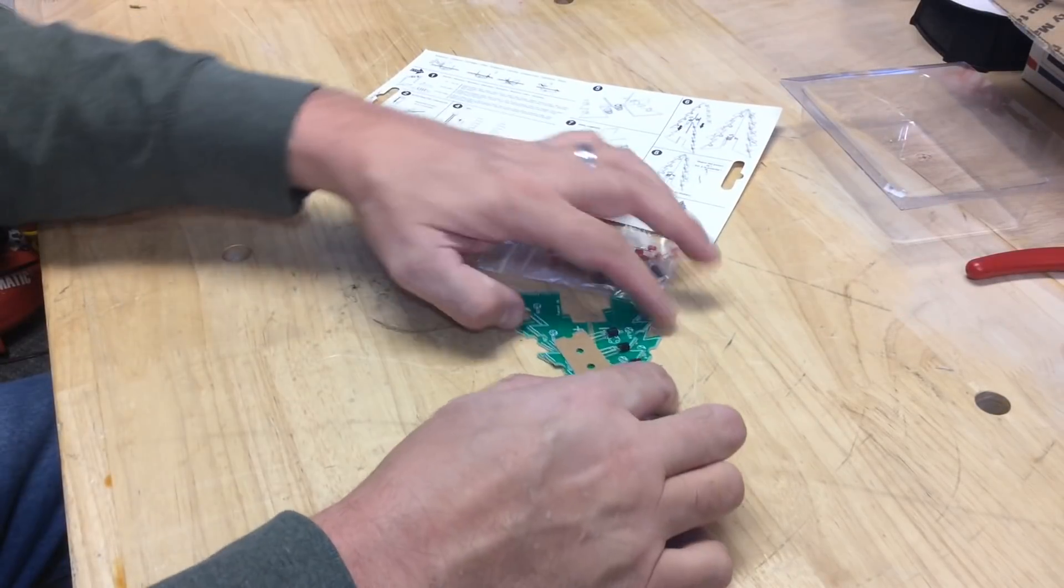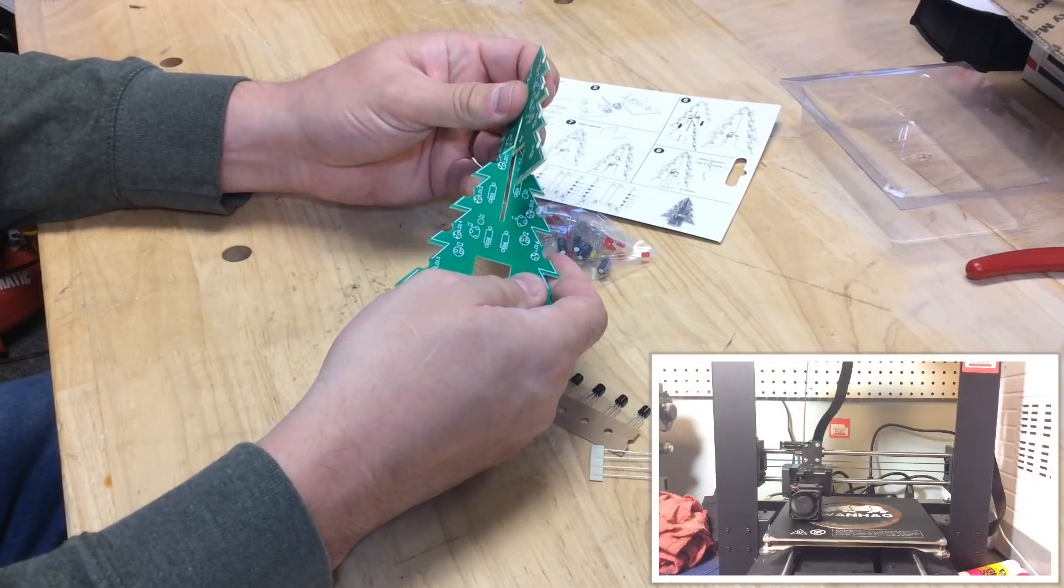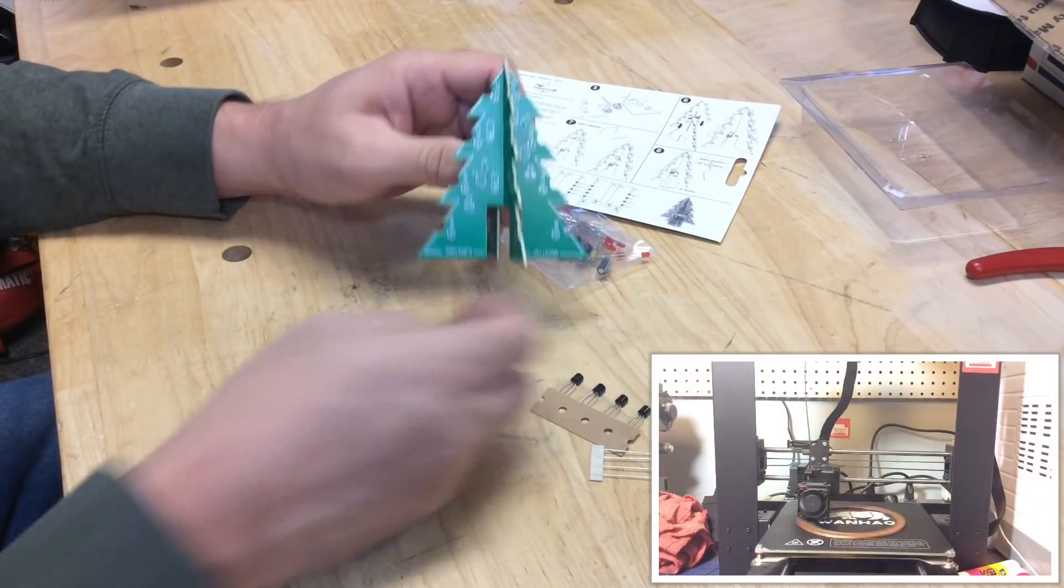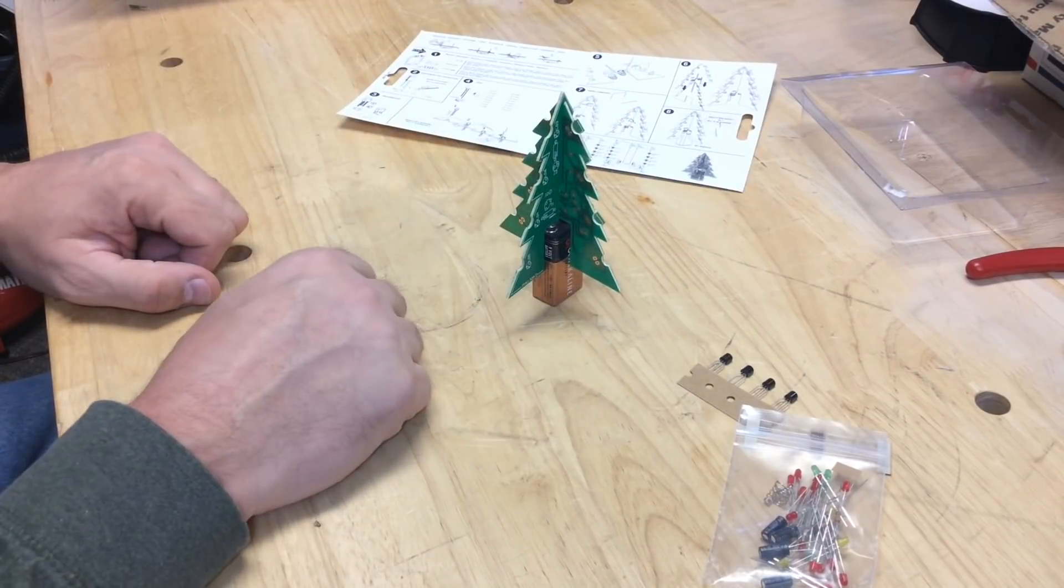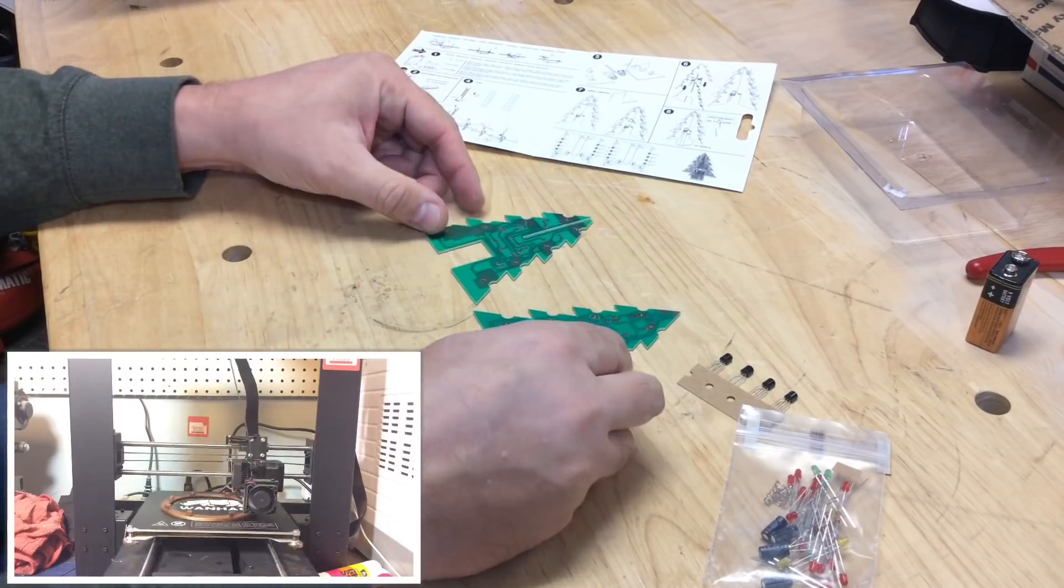So now I need to assemble this thing and make sure I had the right parts. Check the 3D print in the corner—it's coming along fine. The two boards slide together and then sit on top of a 9-volt battery. So this is how the Christmas tree is a 3D Christmas tree.